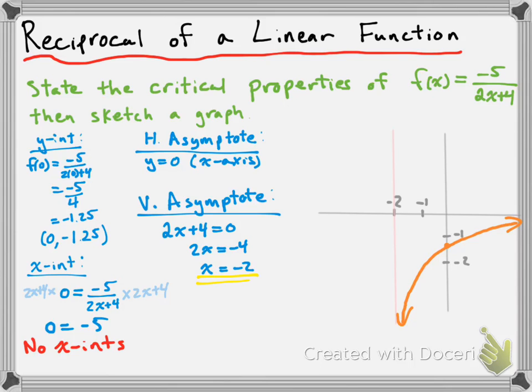To the left of our vertical asymptote, we're not completely sure, so we should decide if it's positive or negative. Let's choose x = -3 as a test value. f(-3) = -5 / (2×(-3) + 4), and we get a value of positive 2.5. So the function is positive to the left of our vertical asymptote, and it looks like this.